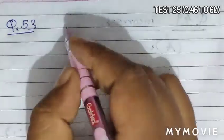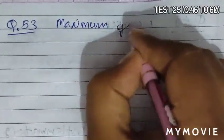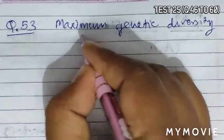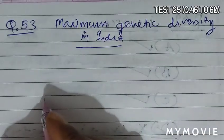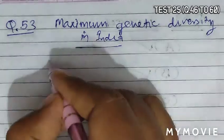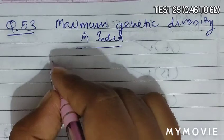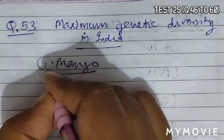Question 53 asks which one of the following has maximum genetic diversity in India. Now there are more than 1000 varieties of mango in India. So according to the option, mango becomes correct answer. That is option A.